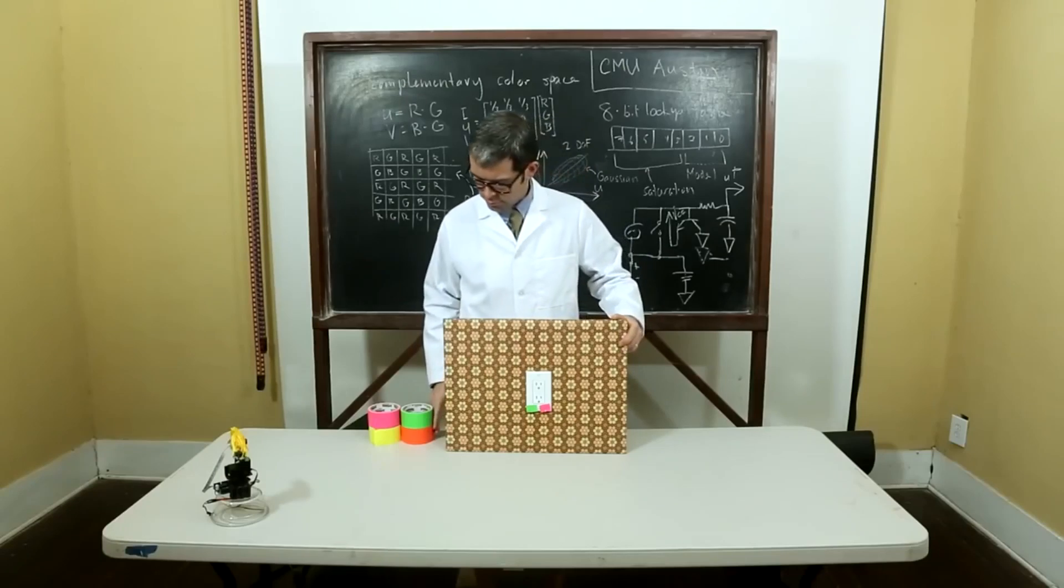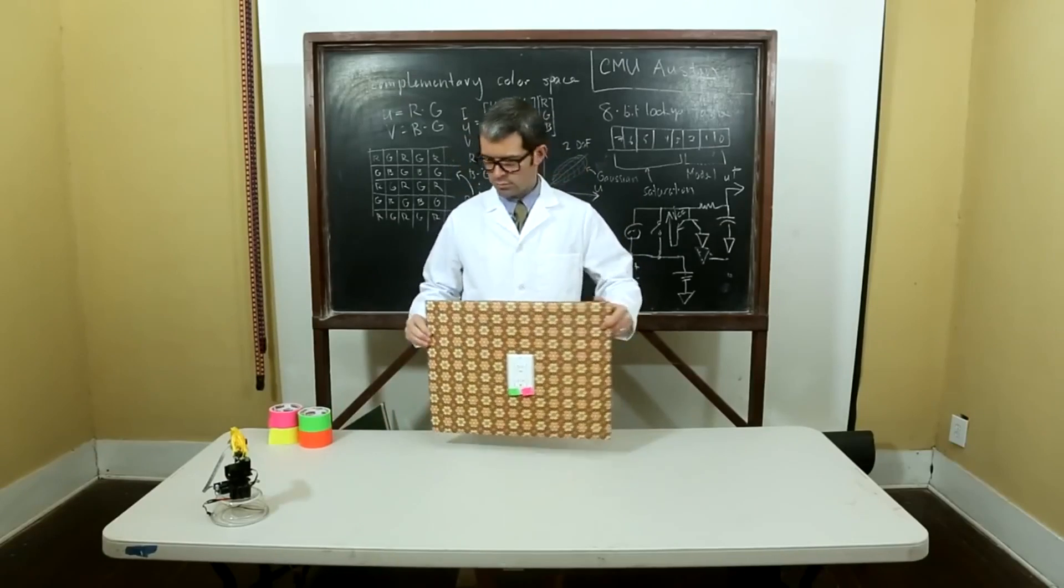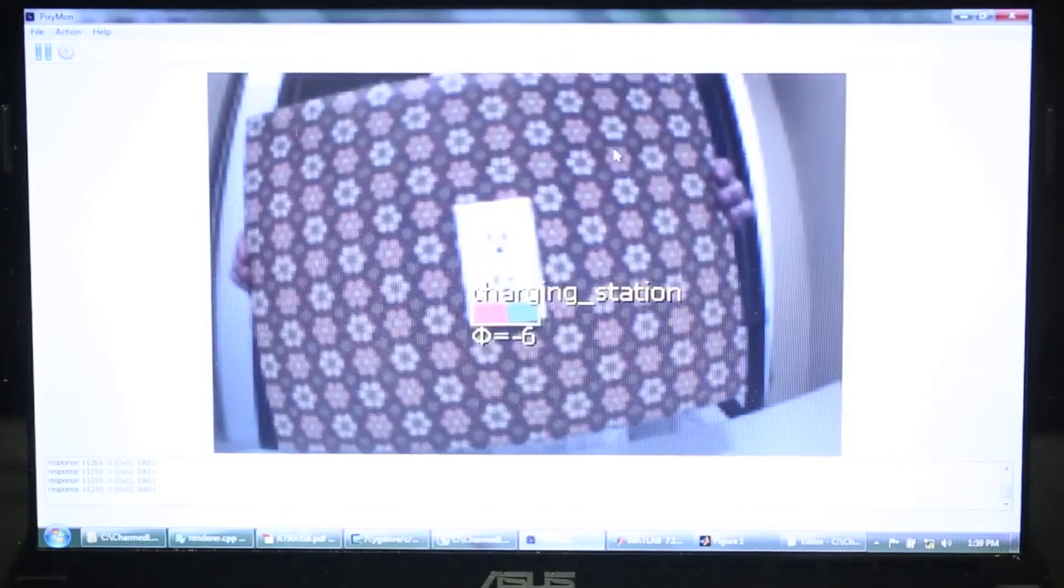Here's a color code to identify a charging station. With color codes, Pixie also reports the angle.